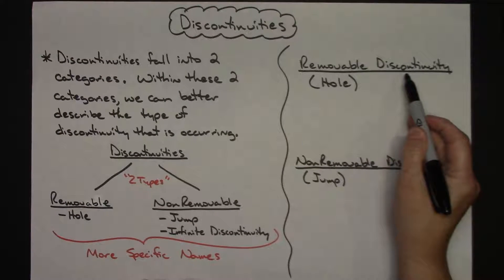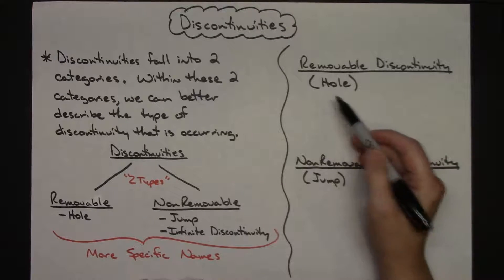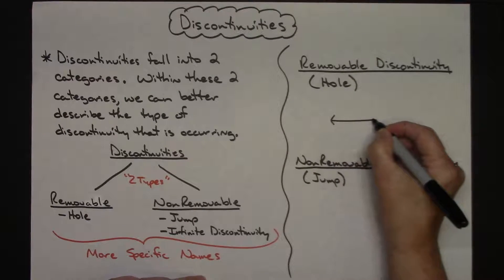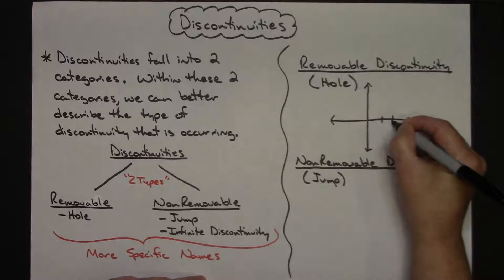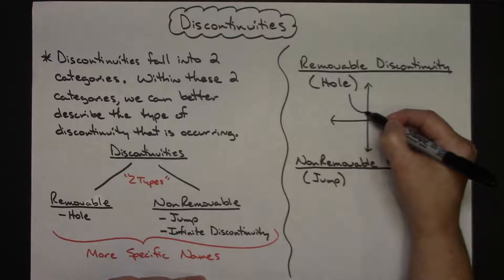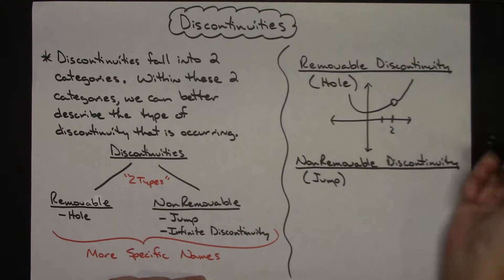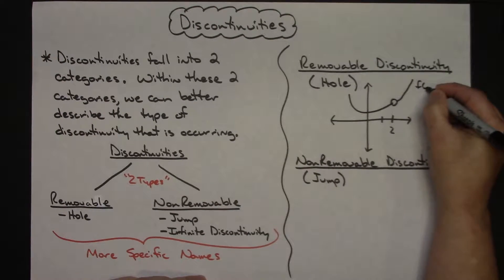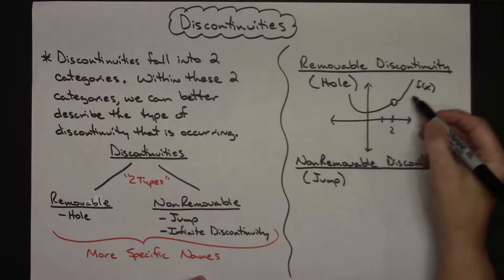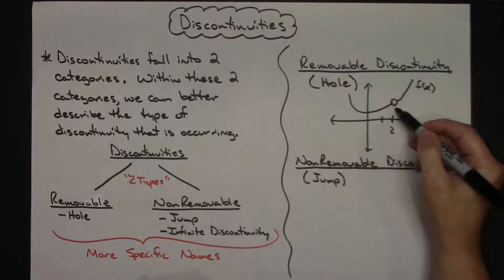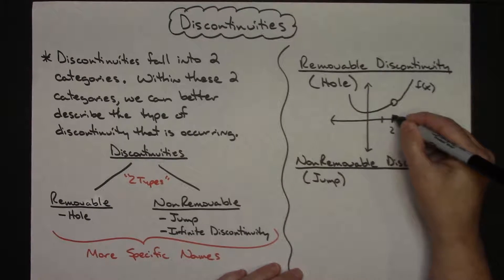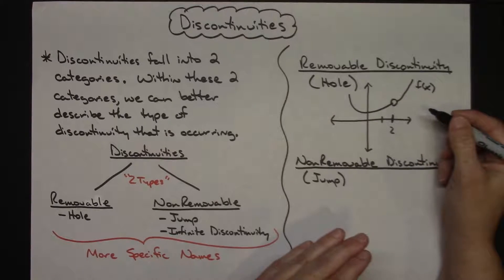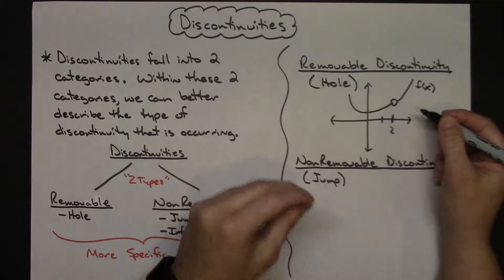If I've got a removable discontinuity, basically what that's saying is I've got a hole in the graph. So you might have something where the graph comes around and then at x = 2 there's a little hole. For some function f(x), I can very clearly see I've got a hole, so it's a removable discontinuity, and I can specifically say my removable discontinuity is located at x = 2.